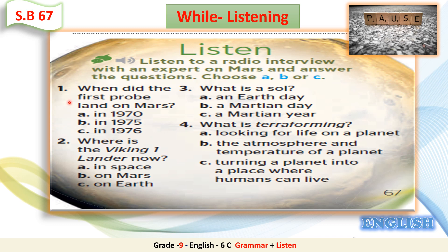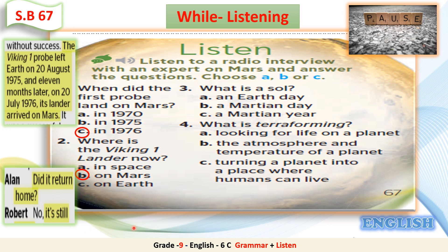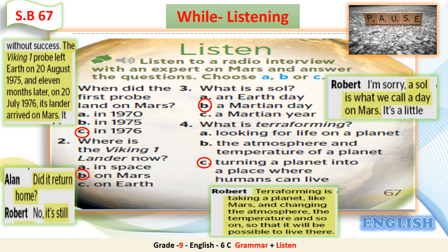Now let's answer the listening questions. Question 1: When did the first probe land on Mars? The answer is C – 1976, as stated in the interview. Question 2: Where is the Viking 1 lander now? It's still on Mars. Question 3: What is a sol? It's a Martian day – a little longer than an Earth day. Question 4: What is terraforming? It is turning a planet into a place where humans can live, by changing its atmosphere and temperature. Well done, students.